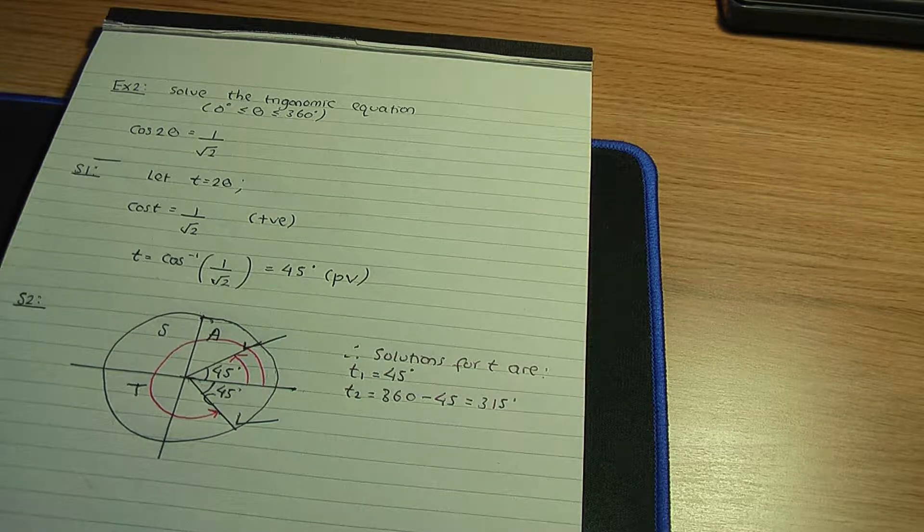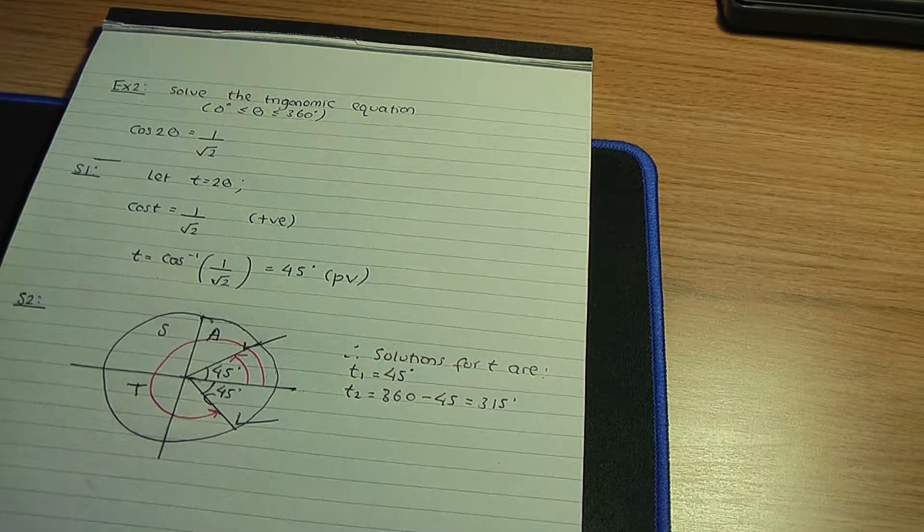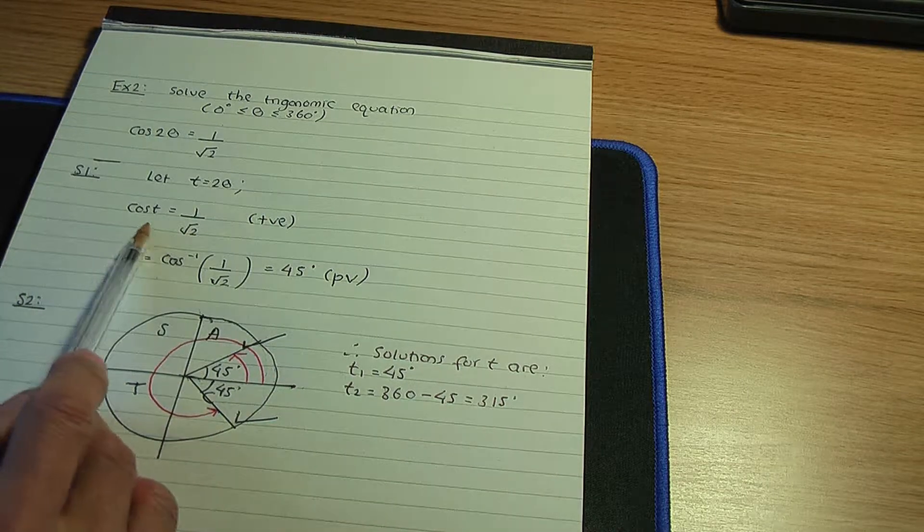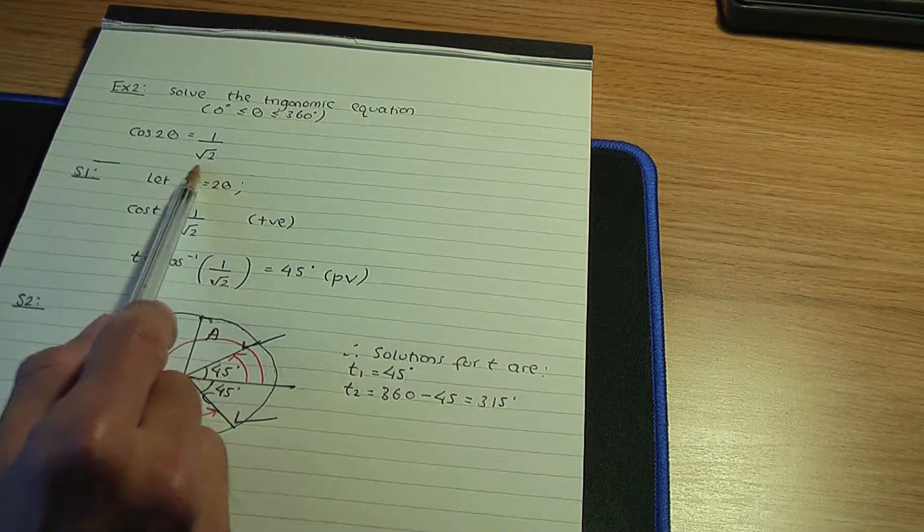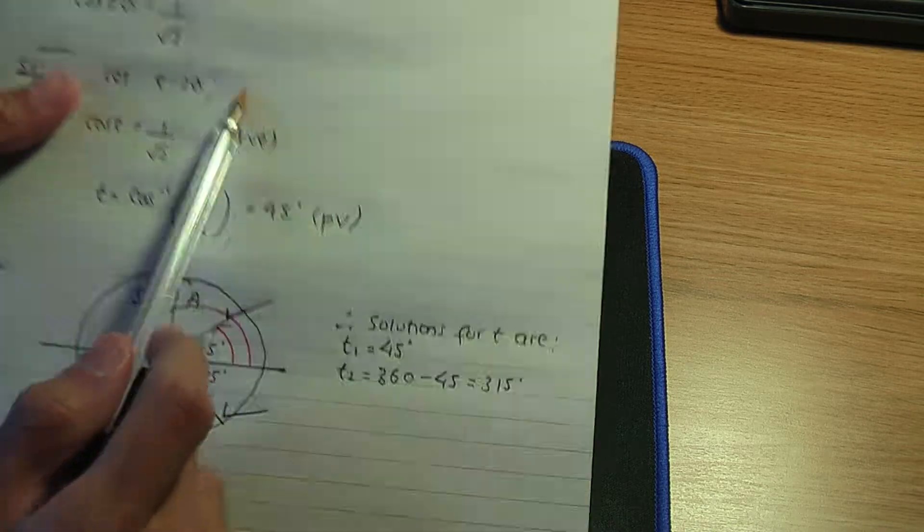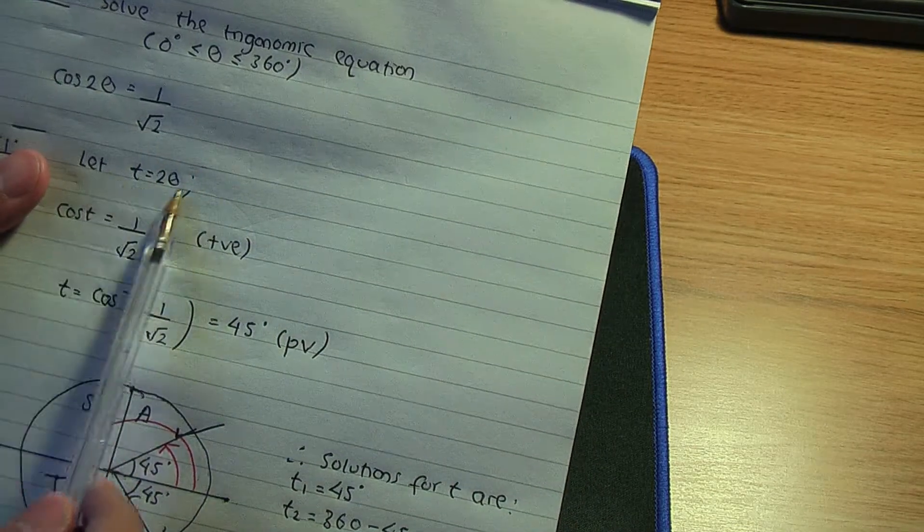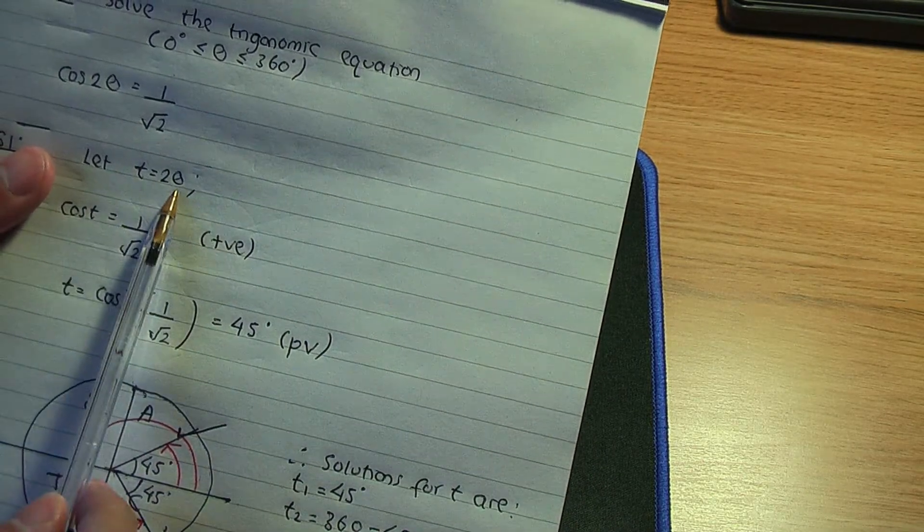It's better to calculate more angles or more solutions for t, because bearing in mind this substitution, bearing in mind this substitution t = 2θ.